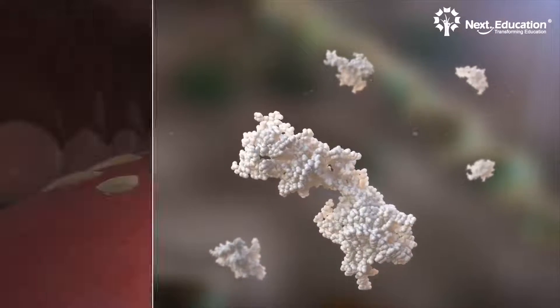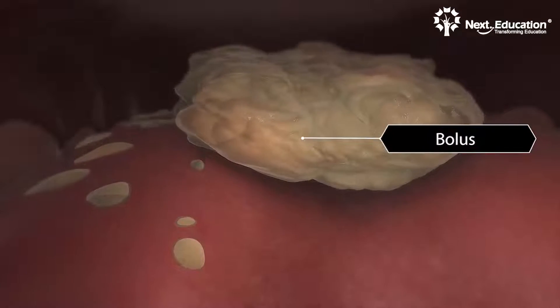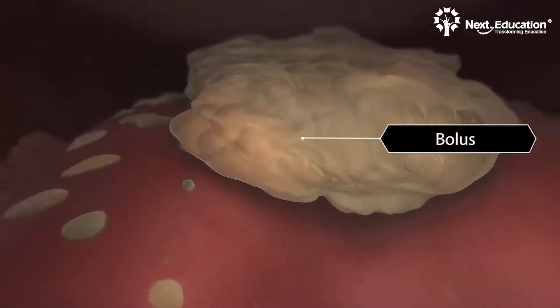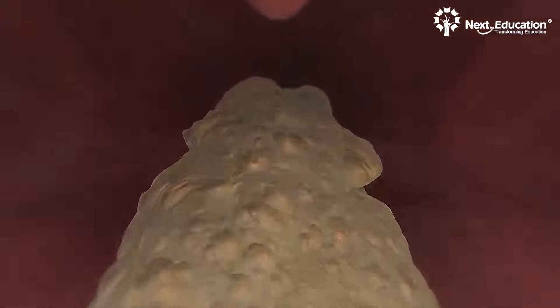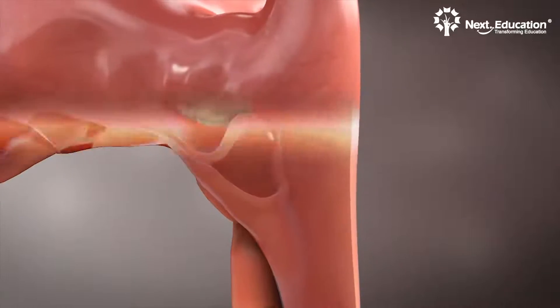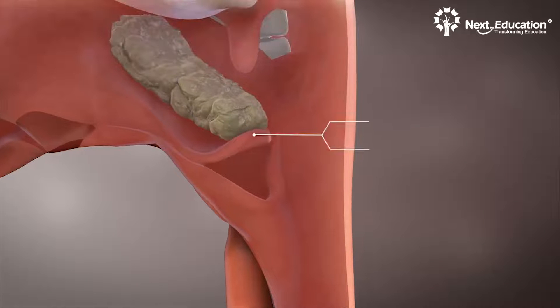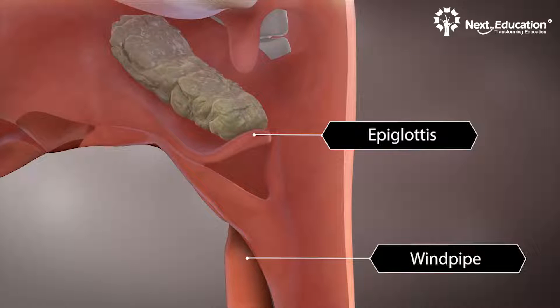Then the masticated food, called bolus, is swallowed down the pharynx. During the movement of the bolus, a flap-like structure called the epiglottis prevents the food from entering the windpipe.